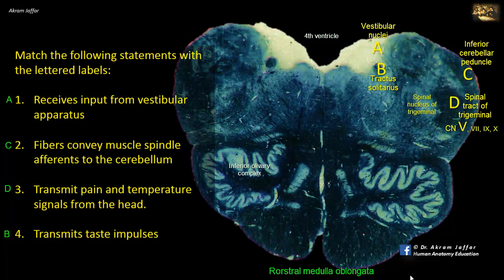The nice sensations of touch and pressure are transmitted to the principal or chief sensory nucleus located at the level of the pons, while the mesencephalic nucleus of the trigeminal, located at the level of the midbrain, receives sensations of discriminative touch, vibration, and proprioception.